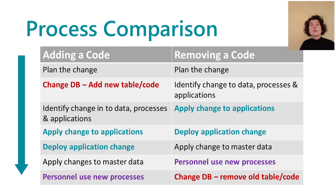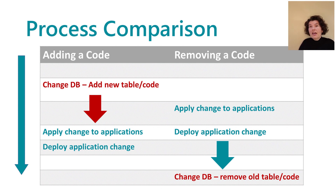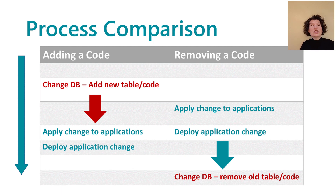Reference data codes must be added to the database before changes are introduced into business processes and applications so that stakeholders can begin using them. The reverse is true when codes are taken away — business processes must be updated before the tables and codes are adjusted in the database.